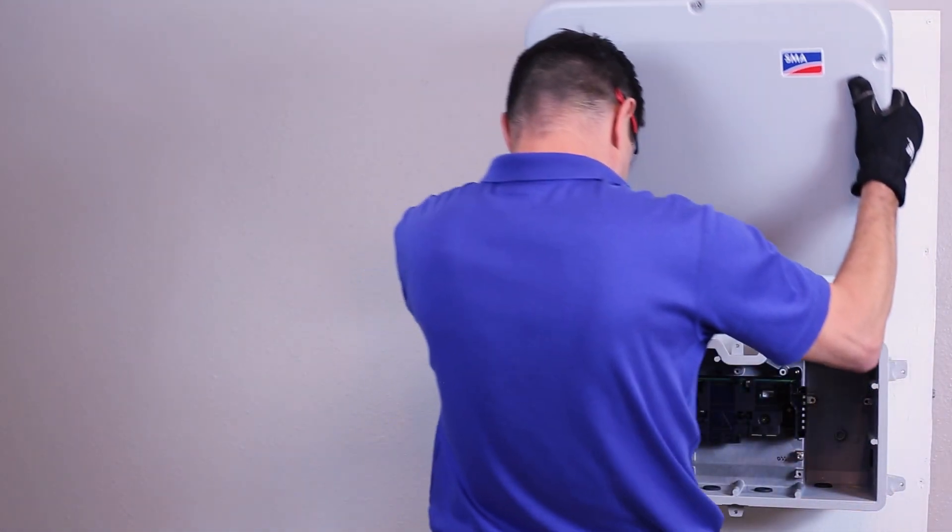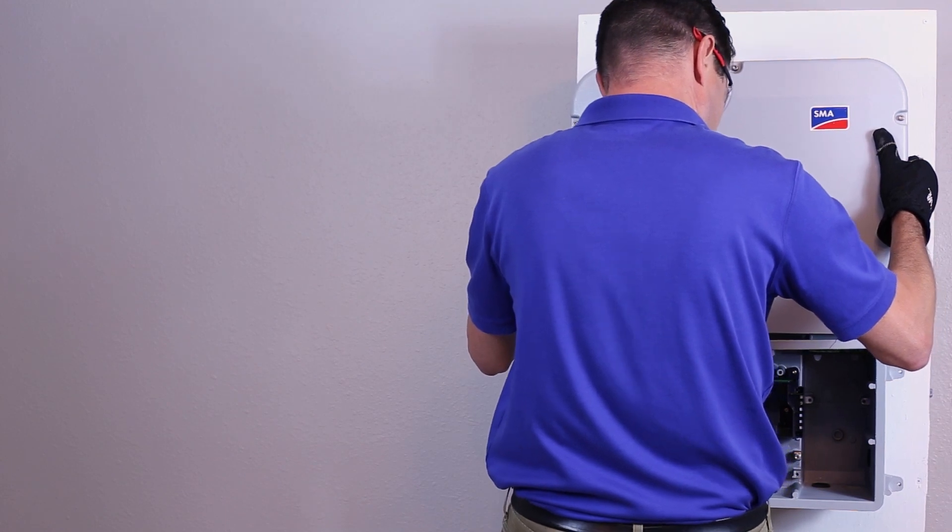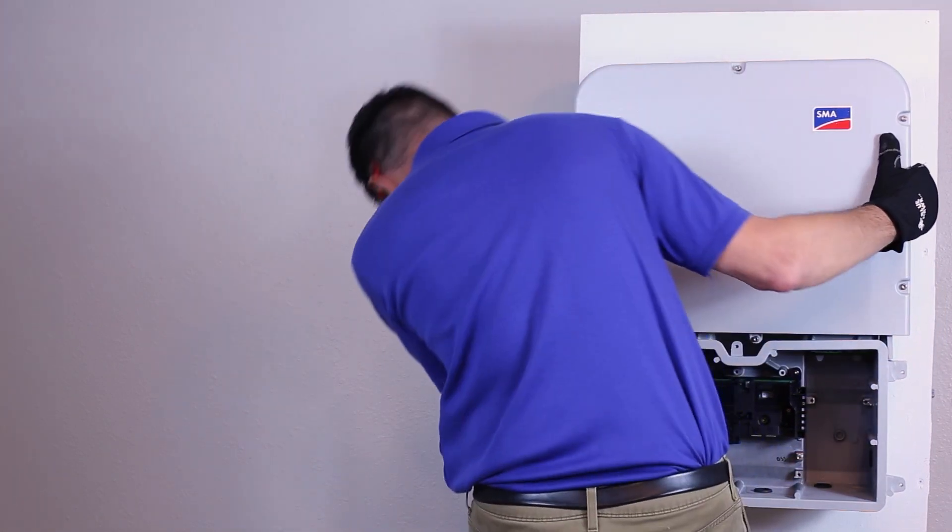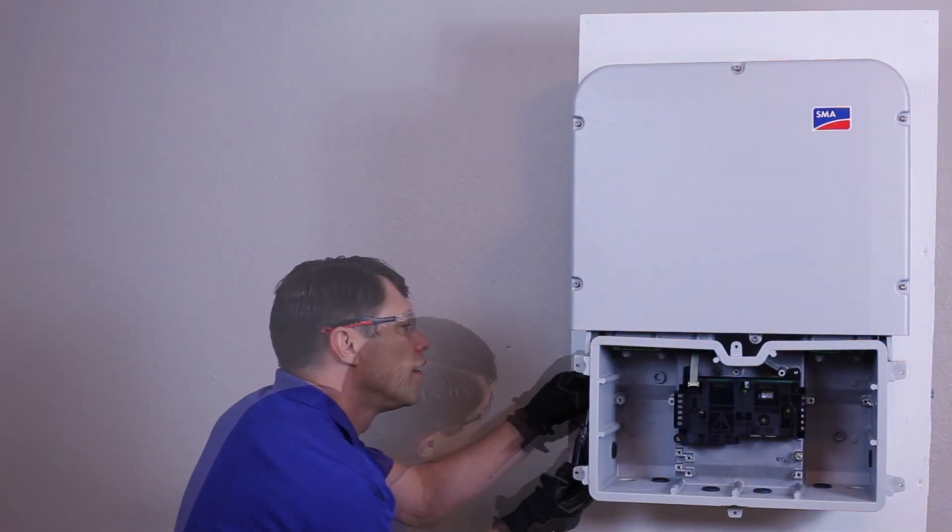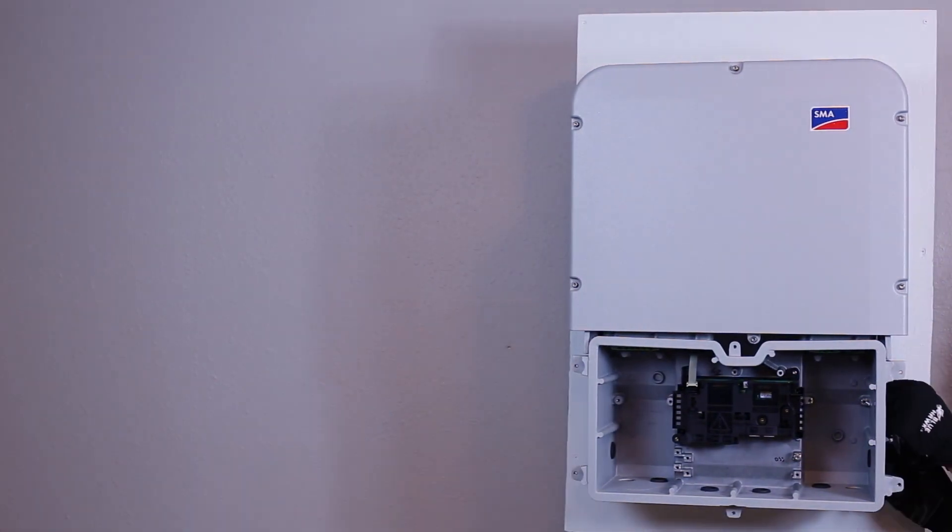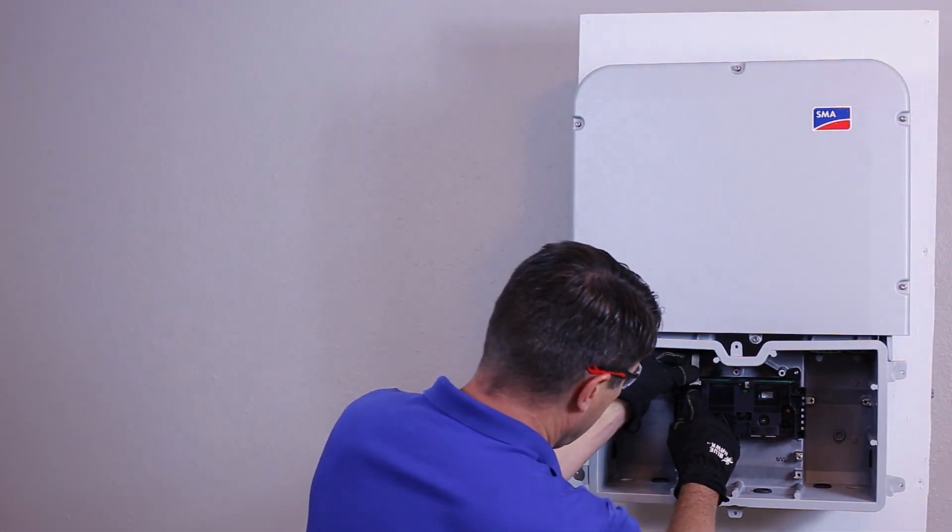Now the power unit can be placed on top of the connection unit and reattached. Ensure the ribbon cable is safely inserted into the connection unit and not pinched or damaged. Secure the power unit to the connection unit by reattaching the four Torx 25 screws and tightening to 53 inch pounds. Reattach the ribbon cable to the communications board.